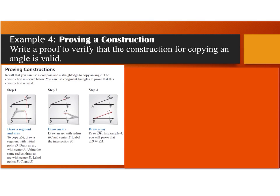Example 4 is proving a construction. We want to write a proof to verify that the construction for copying an angle is valid. Take a moment to look at this construction, read through all the steps, try it on your own, and then we'll write the proof together.